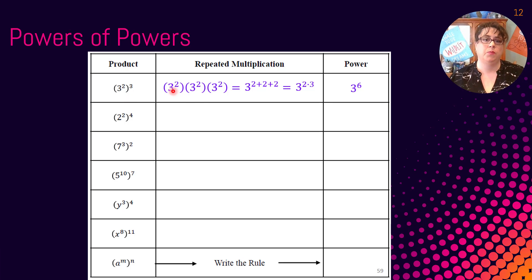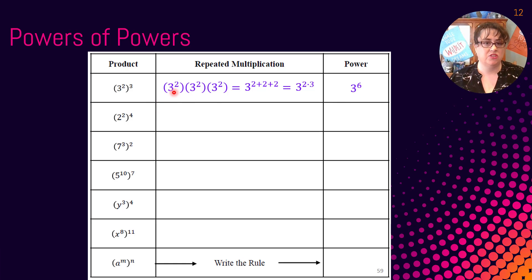If I wanted to write this all out, we would actually see six 3s — because there's 2 here, written three times, giving us six 3s in this problem. So let's look at the next one: 2 squared to the fourth power. Our new base right here is 2 squared, so we're going to write that out four times.